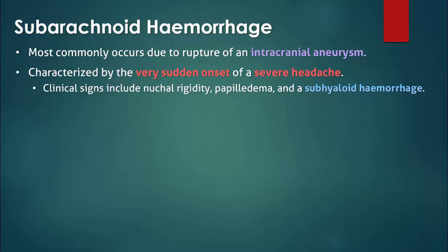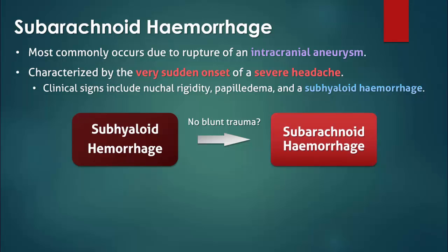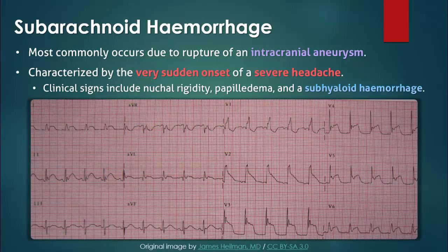A subhyaloid hemorrhage is a less common finding but is pathognomonic for a subarachnoid hemorrhage in the absence of blunt trauma. The ECG may show a variety of changes, ranging from ST and T-wave abnormalities to QT interval prolongation to arrhythmias. For example, this ECG was taken from a patient with a subarachnoid hemorrhage — note the widespread ST segment elevation. It may be reasonable to order troponins in such a case, but do not give antiplatelets, anticoagulant therapy, or thrombolytics.